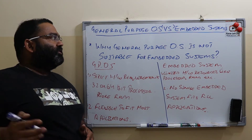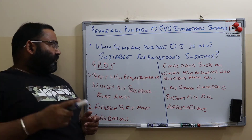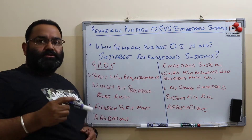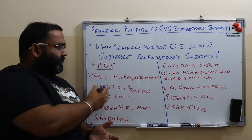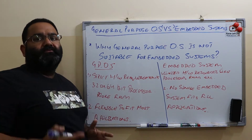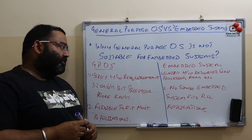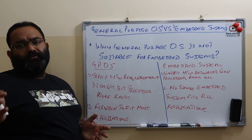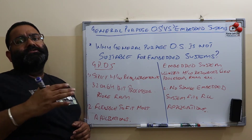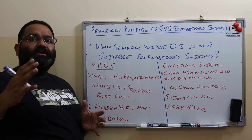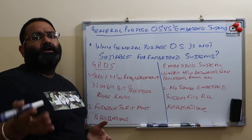Our first point is why general purpose operating systems are not suitable for embedded applications. Here I have written both operating systems and some points on which they differ. The first thing is that general purpose operating systems are very strict on hardware requirements. Most of them work on 32-bit or 64-bit machines, so they need a lot of hardware to run.